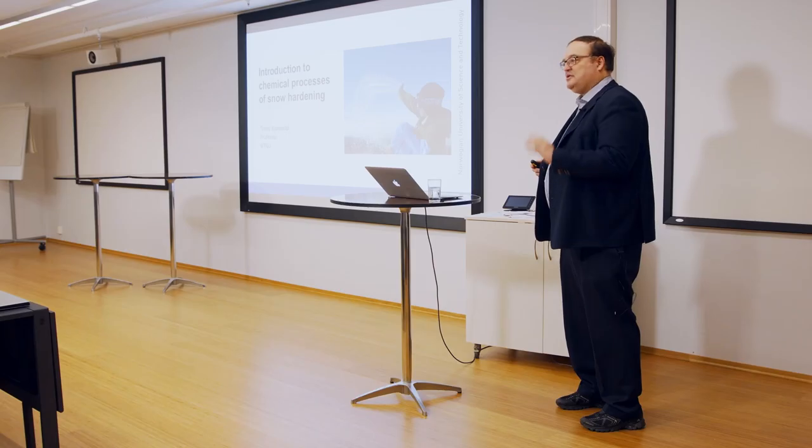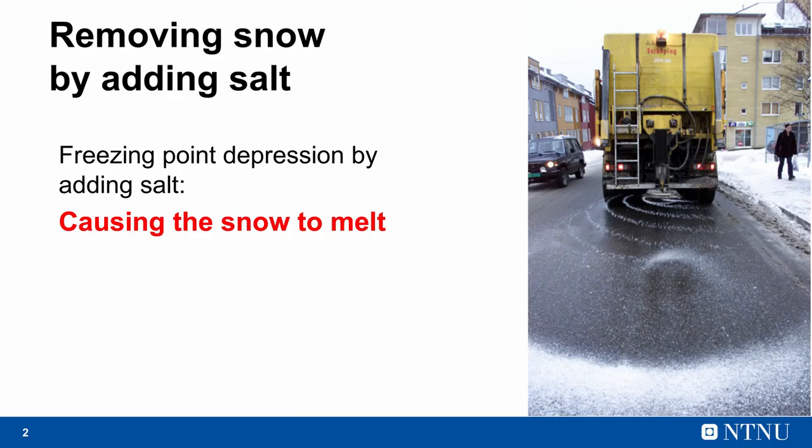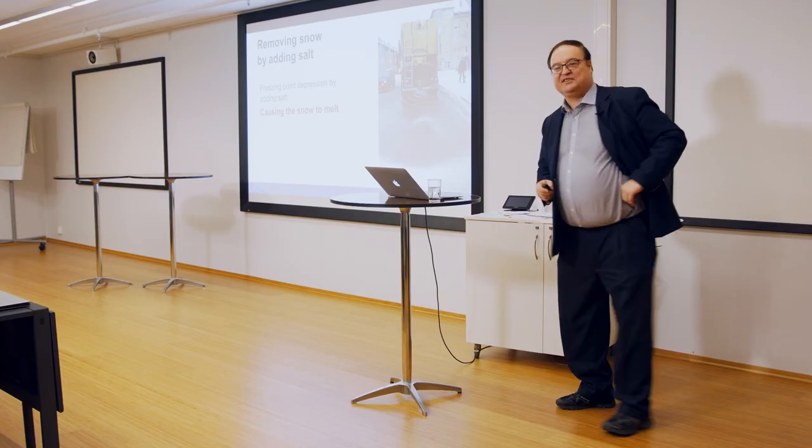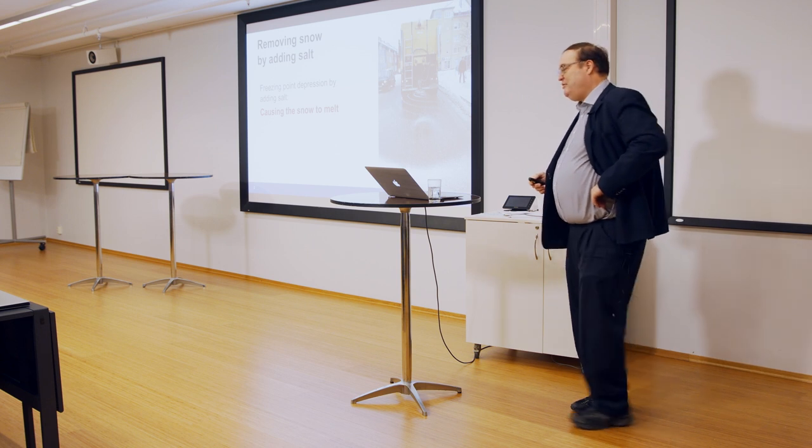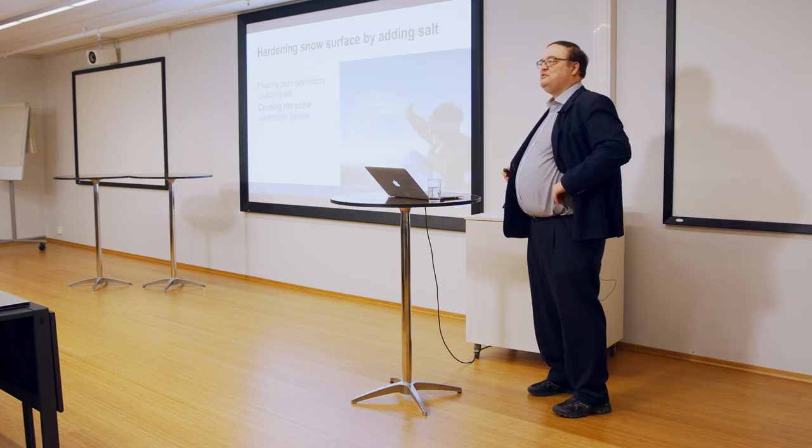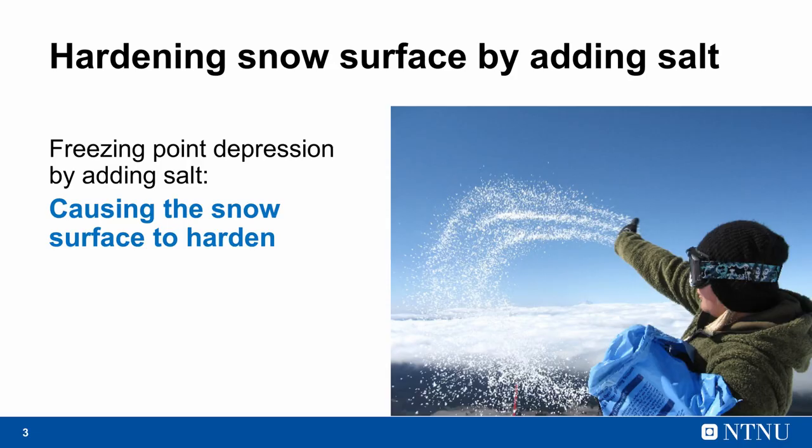The question came when we were at Juvas, a glacier where we do skiing in the summer. You have the sun and you get very wet snow, and we did salting and then we get a very firm track. Someone asked me, Trond, how can it be that the road authorities use salt to get rid of the snow, to get it to melt, whereas we in the Alpine Circus use salt to get the snow hard and firm? How come? I started looking into it and today I just want to show you a little introduction to the chemistry.